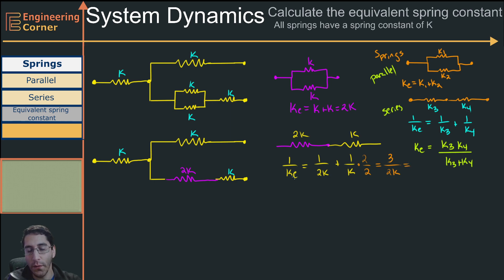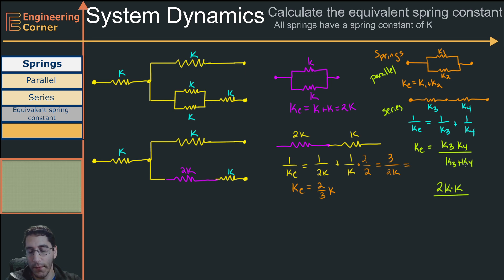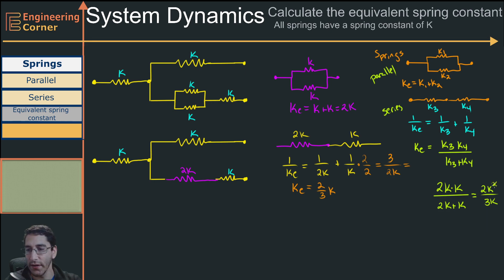That gives 1 over ke equals 3 over 2k. Since we have to take the reciprocal, my equivalent spring constant is 2/3 k. I can verify this with the product-over-sum method: 2k times k divided by 2k plus k equals 2k squared over 3k, which simplifies to 2/3 k — the same answer.